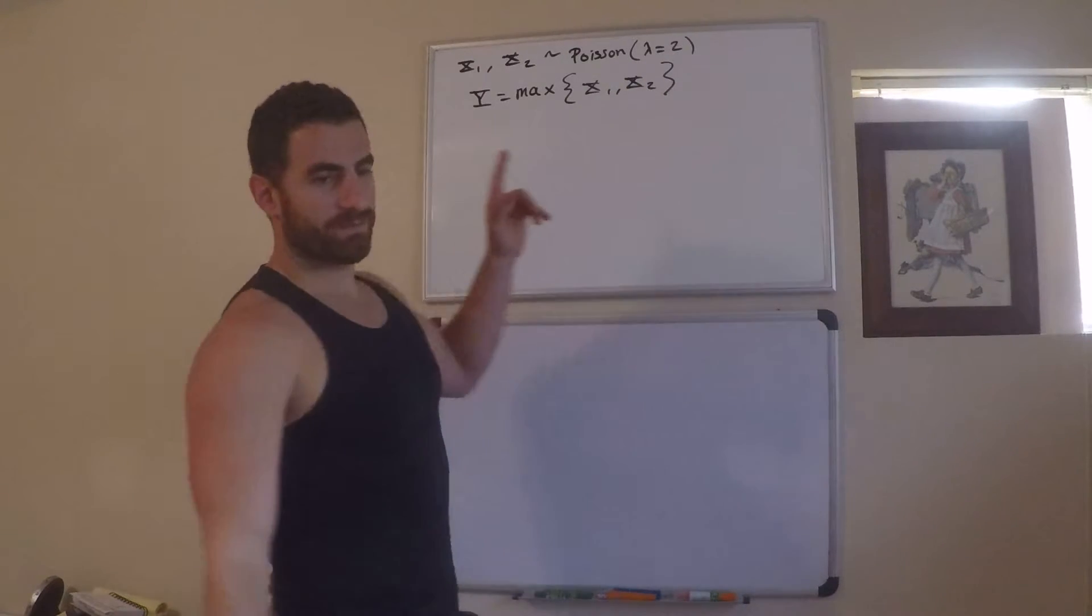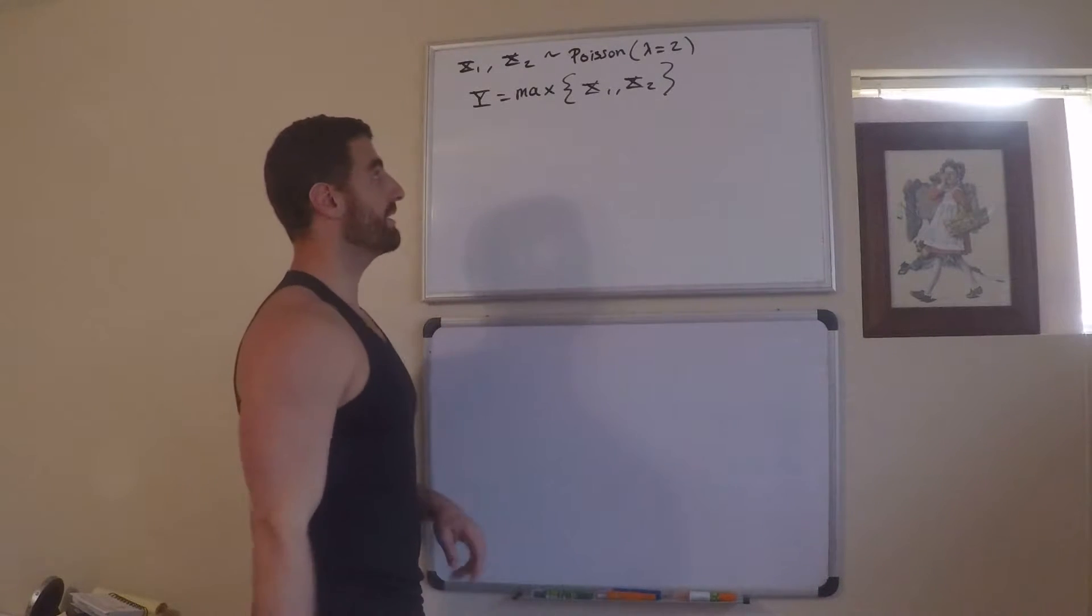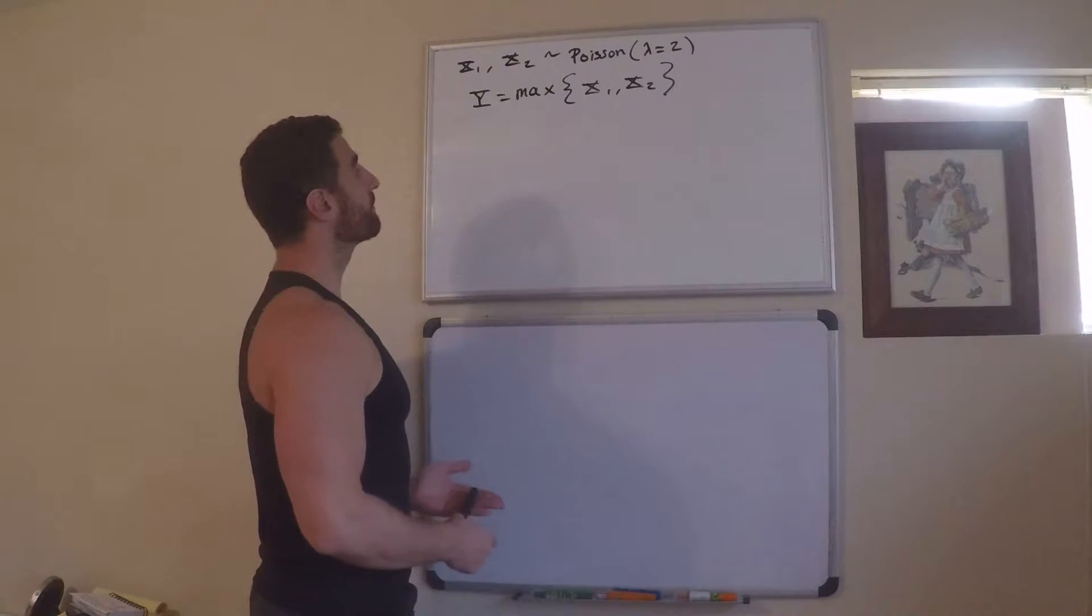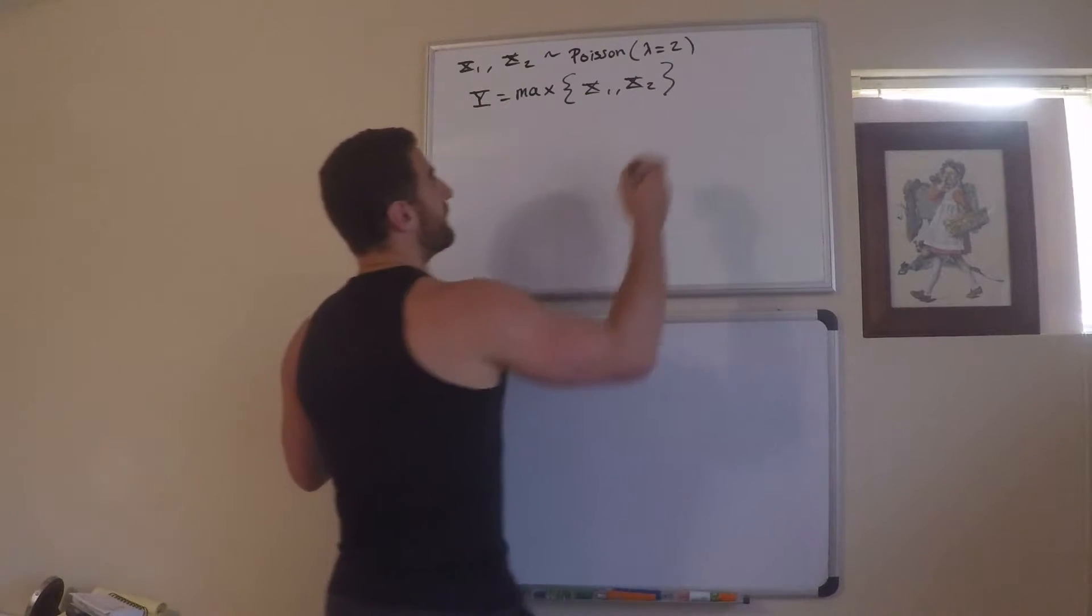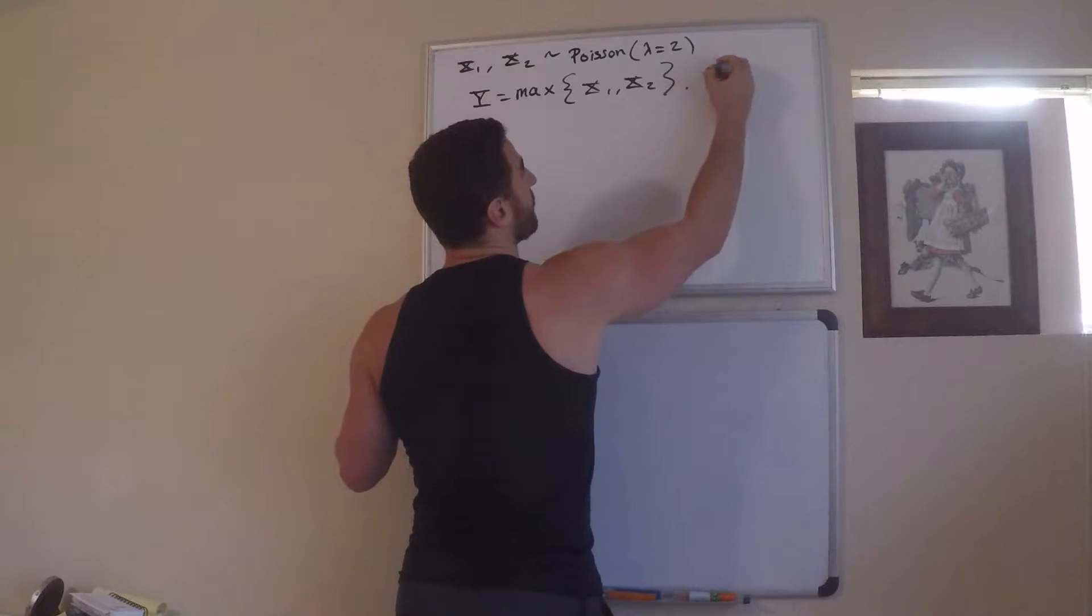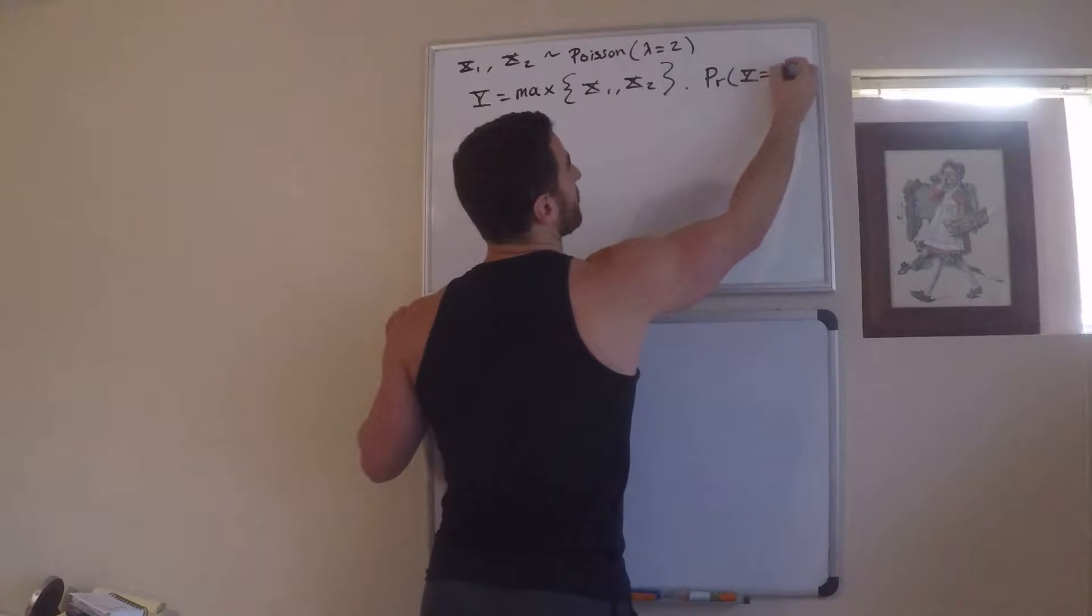By the way, x1 and x2 are given, it's given that they're independent. So define y to be this, and then what we want to do is we want to know what is the probability that y is equal to 1.